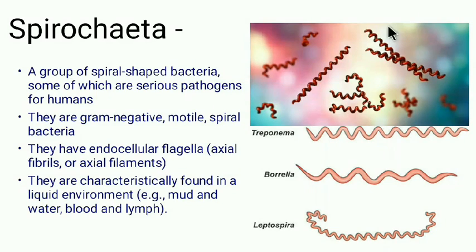Spirochetes are gram-negative, motile, spiral bacteria, some of which are serious pathogens for humans, causing diseases such as syphilis, yaws, and Lyme disease. Examples of spirochetes are Treponema, Borrelia, and Leptospira. These are unique in that they have endocellular flagella.